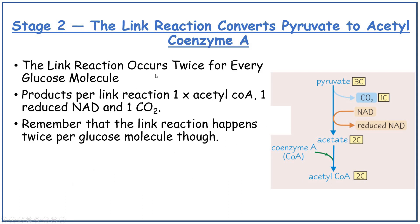The link reaction occurs twice for every glucose molecule. The products per link reaction are one acetyl-CoA, one reduced NAD, and one carbon dioxide. Remember that the link reaction happens twice per glucose molecule.